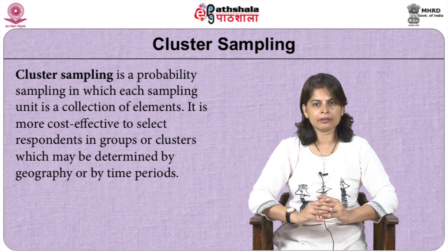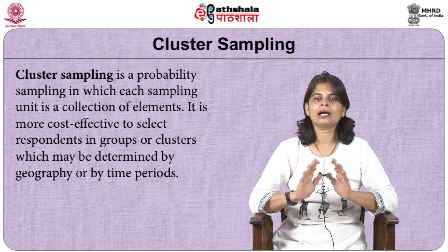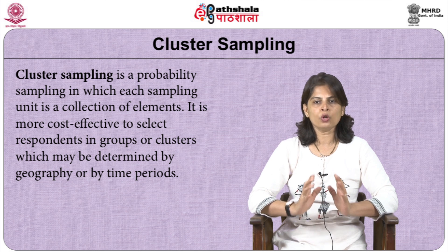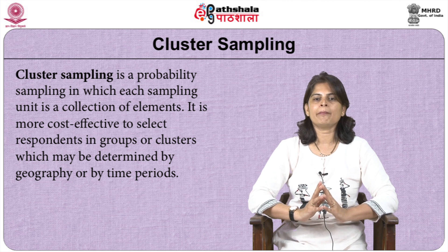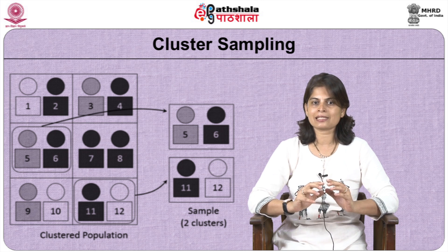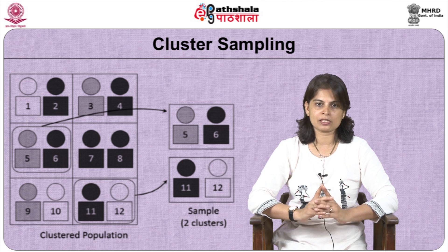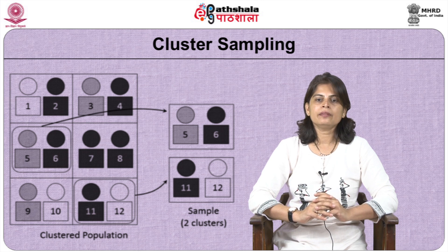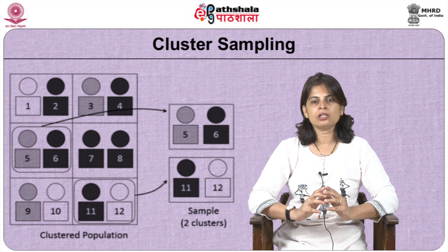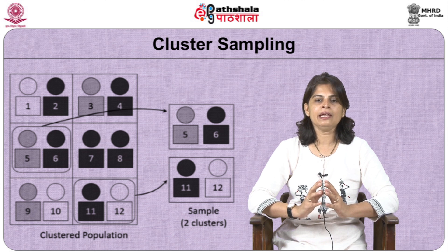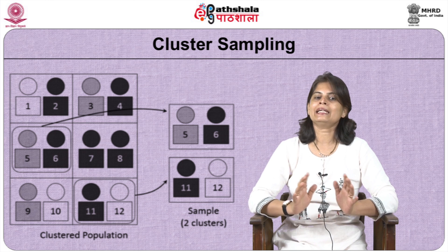Let us come to cluster sampling. Cluster sampling is a probability sampling method in which each sampling unit is a collection of elements termed as clusters. The total population is divided into groups or clusters, and then a simple random sample of these clusters is selected. The population within a cluster should ideally be as heterogeneous as possible, but there should be homogeneity between the two clusters. The clusters should be formed so that each cluster is a small-scale representation of the entire population — mutually exclusive but collectively exhaustive.